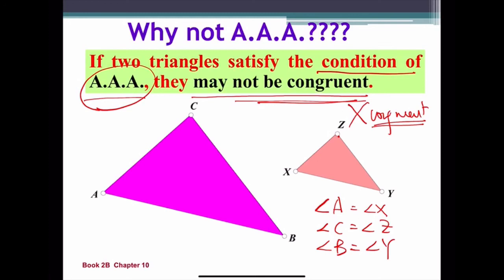So we can't use AAA to prove a congruent triangle.